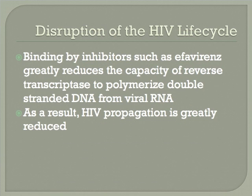This conformational change affects the ability of the polymerase region to properly grip the primer and initiate polymerization of double-stranded DNA. Binding by non-nucleoside reverse transcriptase inhibitors, such as efavirenz, greatly reduces the capacity of reverse transcriptase to polymerize double-stranded DNA from viral RNA. As a result, double-stranded DNA cannot be incorporated into the host's genome, and viral proteins and viral RNA cannot be synthesized. Due to this, HIV propagation is greatly reduced because new viral particles cannot be produced by host cell machinery.